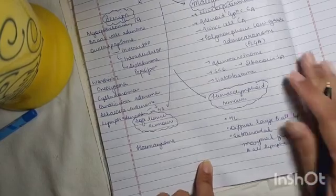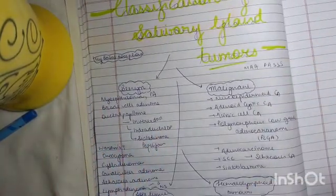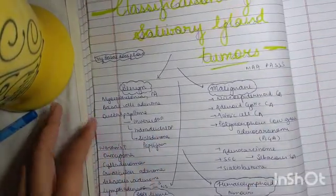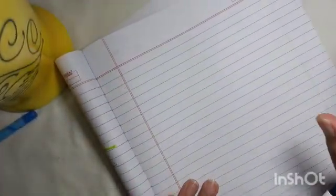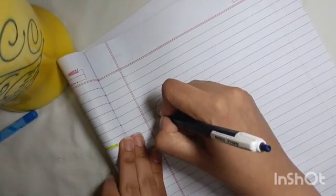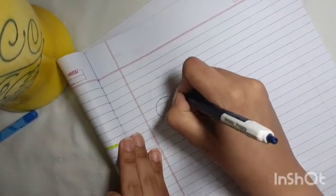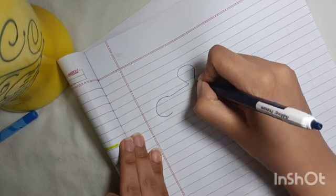Alright. So, this is basically the classification of salivary gland tumors. Now, I will demonstrate it through the diagram at which locations all of them are arising from and which cells they are arising from. So, you can draw this in your exam as well.